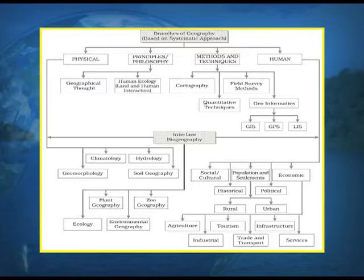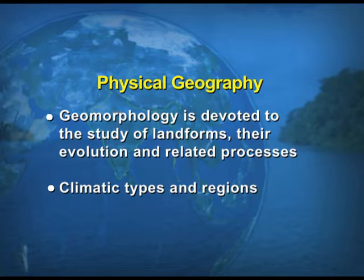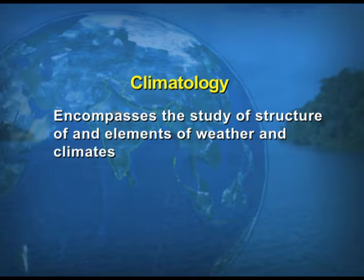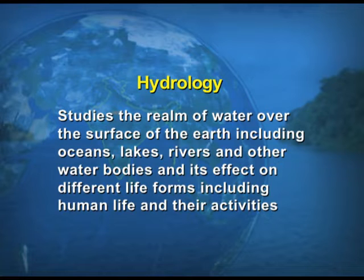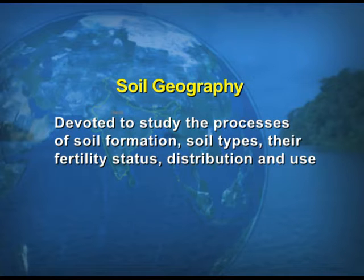Coming back to this diagram, the branches of geography based on the systematic approach include physical geography. The aspects studied here are: geomorphology, climatology, hydrology, and soil geography.